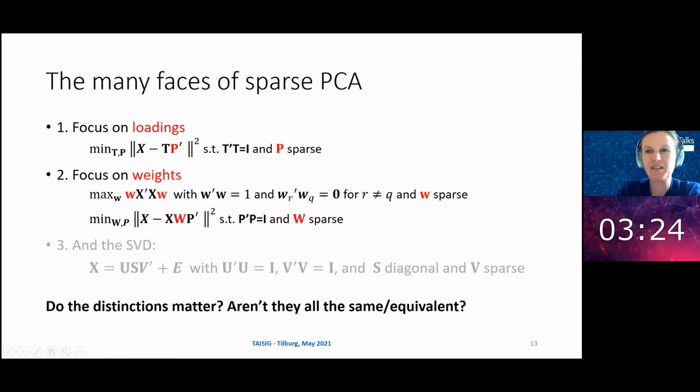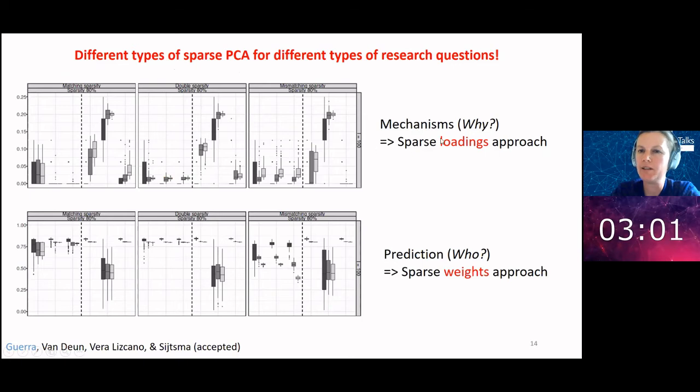There are two types of coefficients in principal component analysis, and people usually are not aware that different formulations of PCA are using different types of coefficients. What I call here weights and loadings usually are denoted in the literature by loadings. As we recently showed, choosing whether you put this type of zeros on the weights or on the loadings really matters. If you're interested in mechanisms, you should put the zeros on the loadings. If you're interested in prediction, it should be put on the weights.